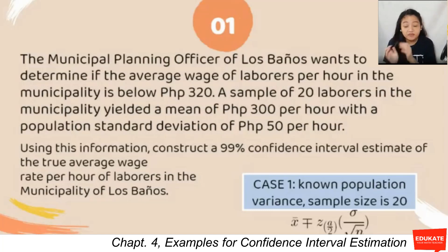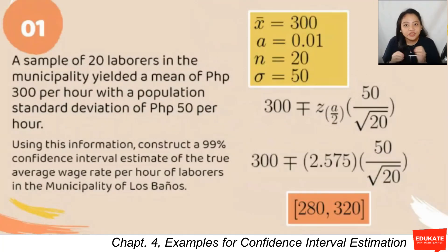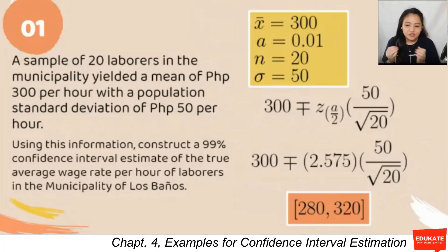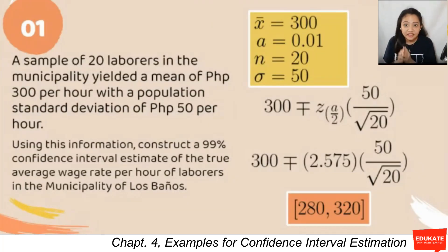We construct the confidence interval estimate using sample mean ± z-table tabular value times the standard error, where the numerator is the population standard deviation. The sample mean is 300. To compute alpha from the 99% confidence level: alpha = 1 − 0.99 = 0.01.